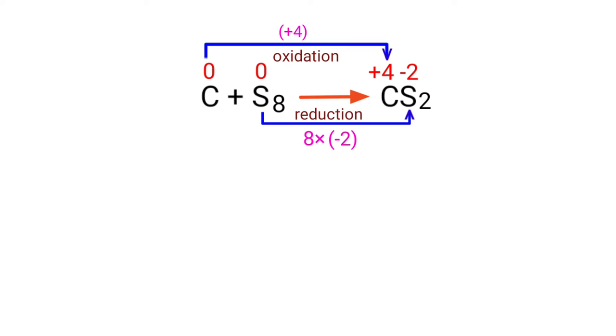Now you can make the increased oxidation number equivalent to the decreased oxidation number. To do this, multiply the increased oxidation number by a coefficient of 4.